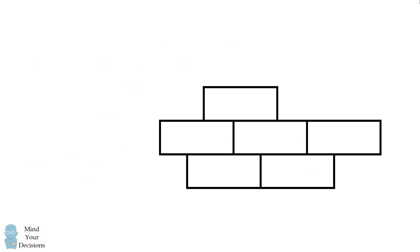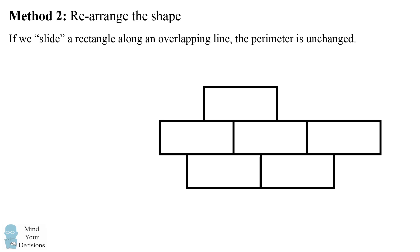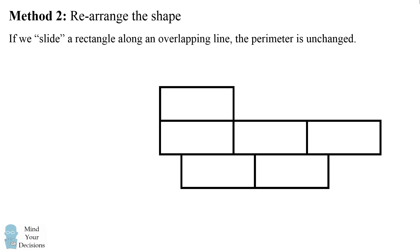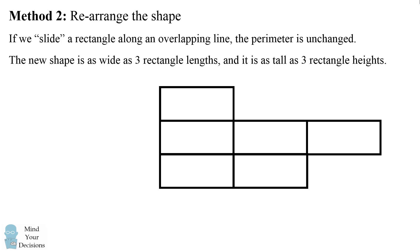Now let me present another way. This involves rearranging the shape to create a new shape whose perimeter will be easier to solve, but will be the same as the original shape. The key insight is if we slide a rectangle along an overlapping line, the perimeter will remain unchanged. For example, if I slide the top rectangle along the overlapping line, the perimeter will be unchanged. We can do the same thing for the bottom two rectangles. We have simply shifted the point at which they overlap — we've not made these bricks go off the edge, we've simply shifted their locations along the points at which they already overlapped. So we now have a new shape which has exactly the same perimeter as the beginning shape.